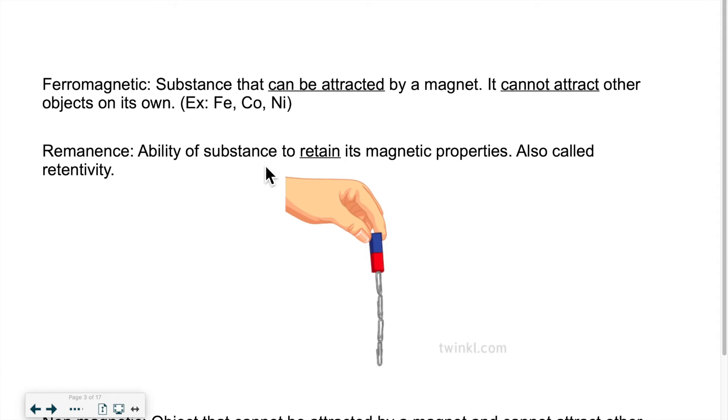Now I was telling you that some substances are attracted by magnets but they're not magnets themselves. Why are they attracted? Because they contain certain specific metals. Example: iron, cobalt, and nickel. Those are elements that are ferromagnetic. These elements can get attracted by a magnet.